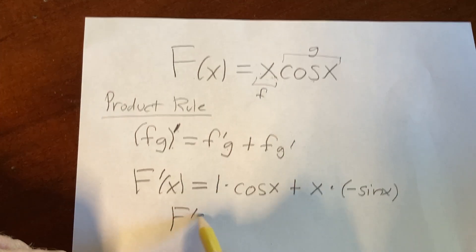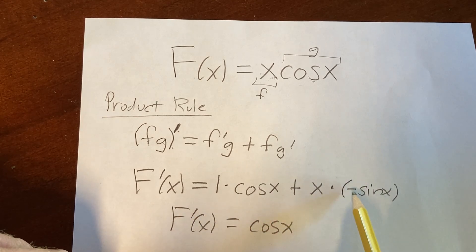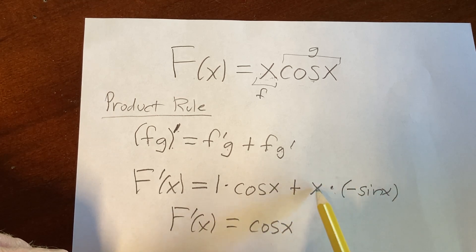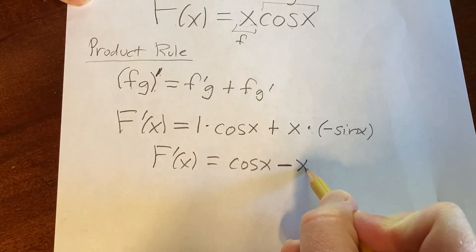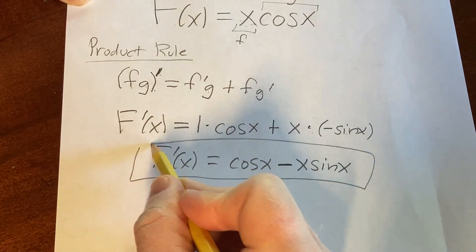So big F prime of x equals cosine x. And then here, see how there's a plus sign and this is being multiplied by all of this. When you multiply these, you really get negative x sine x. So you can just put the negative here, and then we have x sine x. And so that would be big F prime, the derivative of big F.